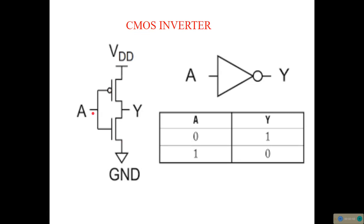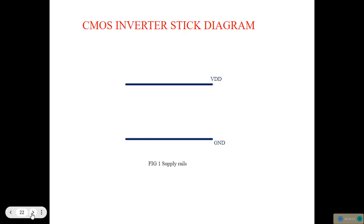This is the gate terminal. We have connected the gate of the P-MOS Transistor and N-MOS Transistor together, and the input A is applied to the gate. Whereas the output is taken from the drain connection.